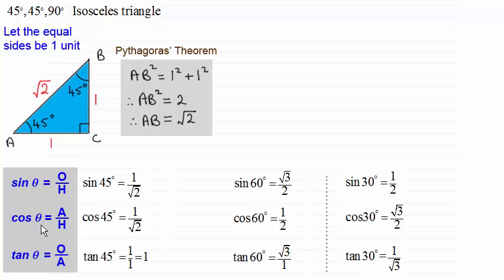Similarly, cosine of 45 degrees is adjacent over hypotenuse. Using this 45 degrees then, adjacent is one, hypotenuse is root two. So both these answers are exactly the same.